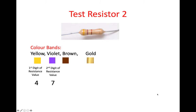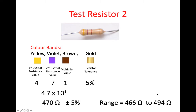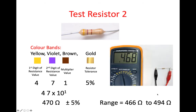Brown, the multiplier value, has a value of 1. And again, gold is plus or minus 5%. So that gives you 47 multiplied by 10 to the power of 1, which gives you 470 ohms, plus or minus 5%. That gives you a range of 446.5 ohms to 493.5 ohms, and we measured this at 468 ohms — close to the lower end of the range, but still within range.